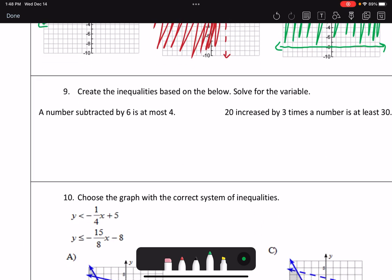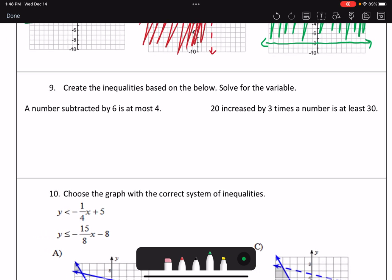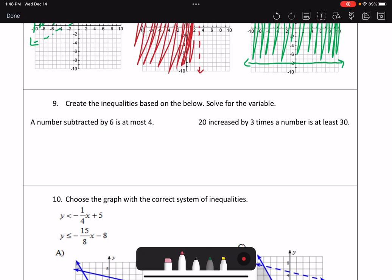Number 9 says create the inequalities based on the below, and then solve for the variable. So I have a number subtracted by 6 is at most 4. Well, a number is not defined, so I can just say x minus 6. At most means it could equal it, but it can't be any bigger than it, so it has to be less than the value of 4. Then it wants me to solve for it, so I'm going to add 6 to each side. So therefore, x is less than or equal to 10.